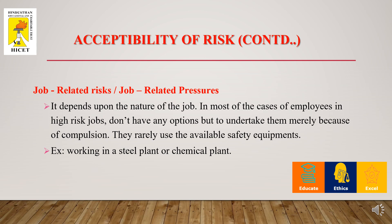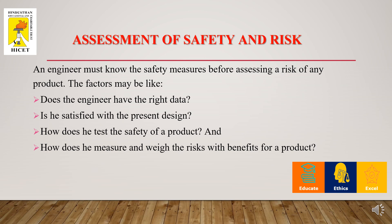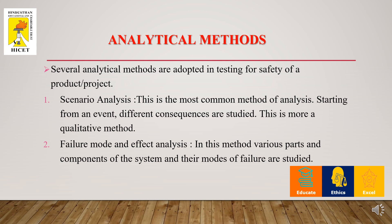These employees rarely use available safety equipment — for example, those working in a steel plant or chemical plant face many job-related risks and pressures but take them for granted. An engineer must know how safety measures should be applied before taking a specific risk. They must answer: Do they have the right data? Are they satisfied with the present design? How do they test the safety of a product, and how do they measure risk against the benefit of a product?